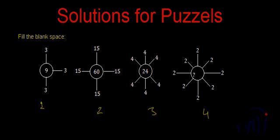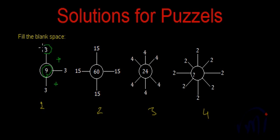Let's first find the logic. Here we have a circle and we have three spokes coming out of it, and at the end of each we have a number which is three. So if we add all these three: three plus three gives us six, and six plus three gives us nine. Or, the number three multiplied by the number of spokes — three multiplied by three gives us nine. This is the logic the first figure is following.